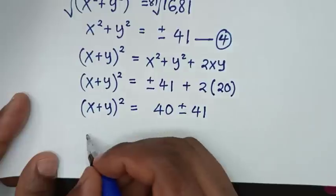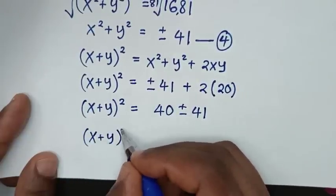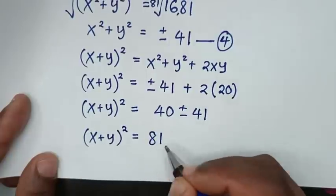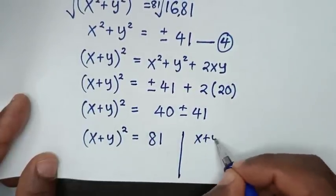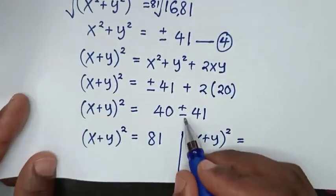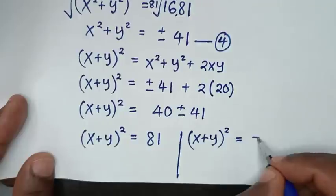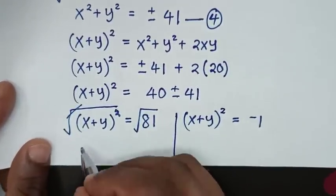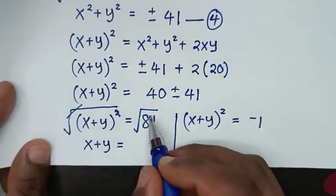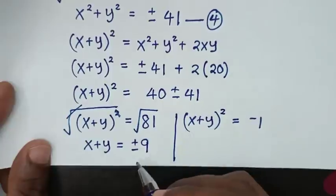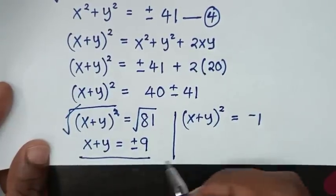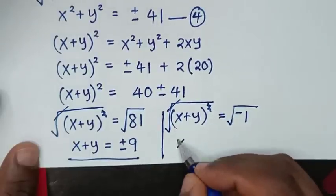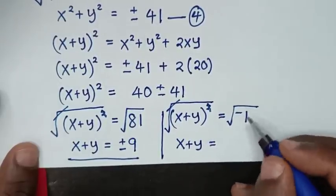From here we have two solutions because of plus or minus. The first solution: when it is positive, x plus y bracket squared is equal to 40 plus 41, which is 81. The second solution: x plus y bracket squared is equal to 40 minus 41, which is negative 1. Applying square root on both sides for the first solution, x plus y is equal to plus or minus the square root of 81, which is plus or minus 9. For the second solution, applying square root on both sides, x plus y is equal to the square root of negative 1, which is i.